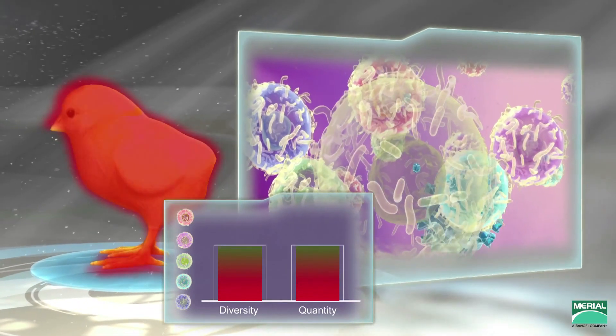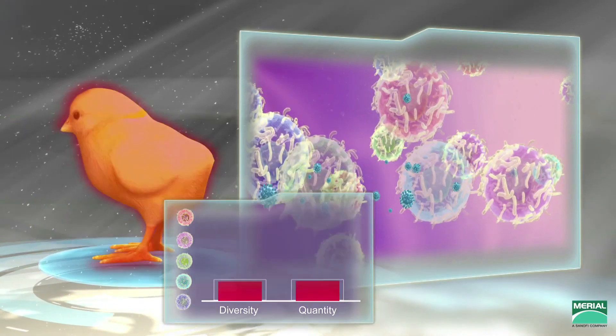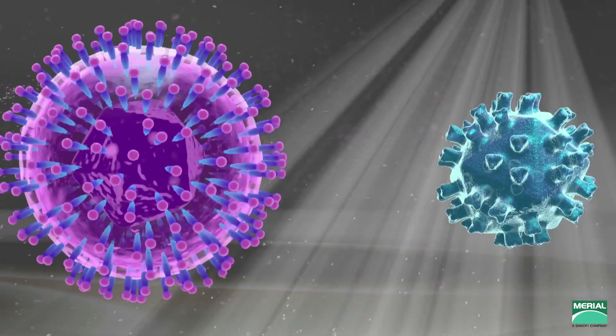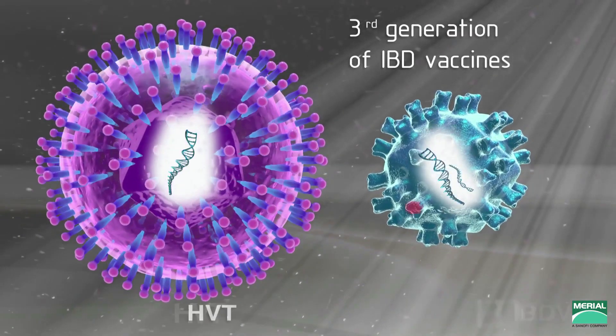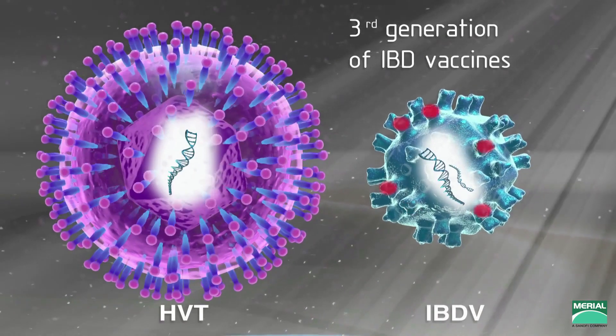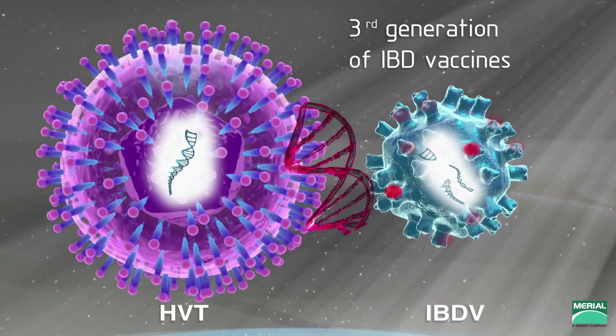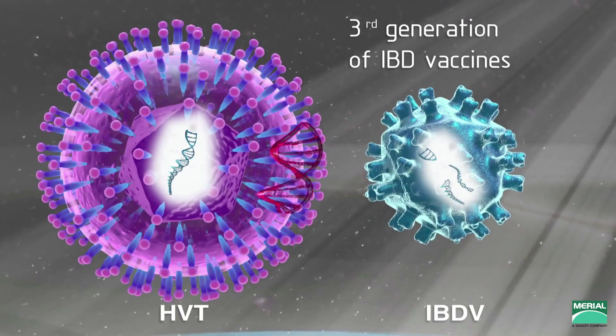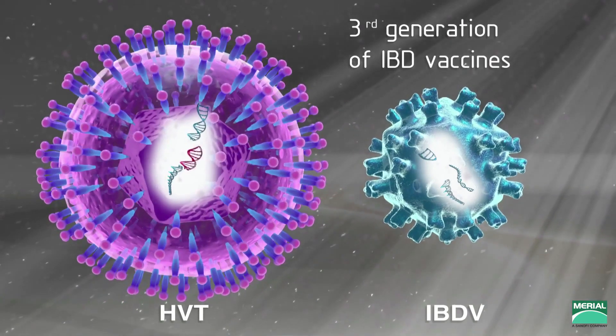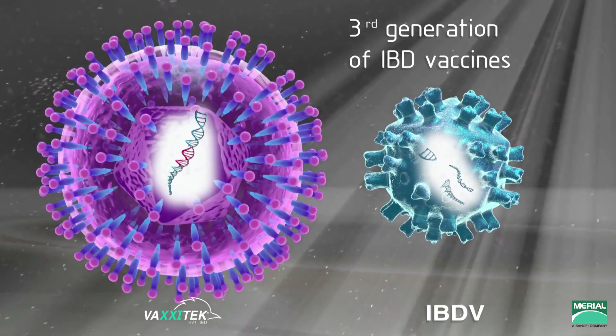For safety reasons, the immune complex vaccine cannot be used in pullets. New biotechnologies were needed to develop the third generation of IBD vaccines, a vector vaccine based on the HVT virus widely used to prevent Marek's disease. The gene coding for the VP2 protein of the IBD virus was transferred into the HVT genome to generate the Vaxxitek HVT plus IBD vector vaccine.